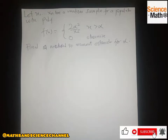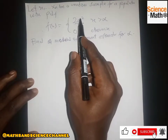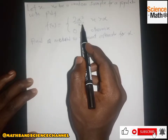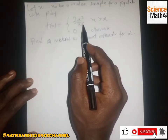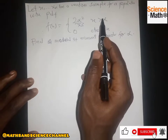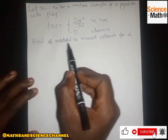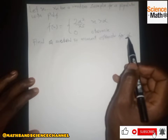Hello everyone, welcome once again to my channel. In this section we are given another question on the method of moments. We are given the piecewise function f(x) = 2α²/x³ for x greater than α. The question says we should find a method of moments estimator for α.